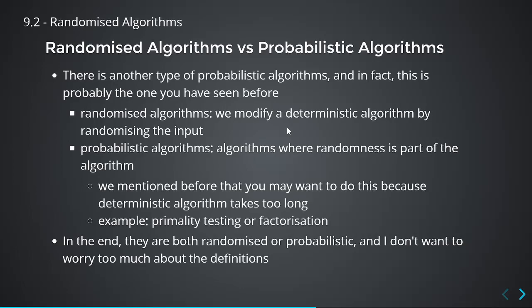Are both types randomized? Yes. Are they both probabilistic? Yes. The terminology can vary — you'll hear people say 'randomized algorithms' and 'probabilistic algorithms.' Just make sure you understand they're like two different versions, but in the end they're both randomized and both probabilistic. This unit is not about definitions, so I'll leave it at that.